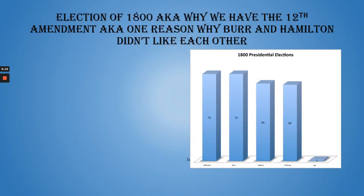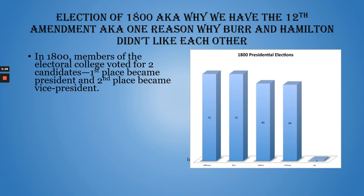Let's talk about why we have the 12th Amendment, also known as why Aaron Burr and Hamilton didn't like each other — or at least one reason. The 1800 election. Up to 1800, members of the Electoral College would vote for two candidates. You'd get a piece of paper and write down two people you wanted to be president. You only have one president, but the person who came in second would be vice president.